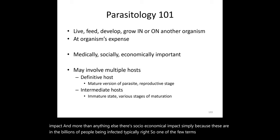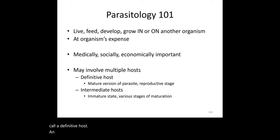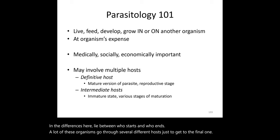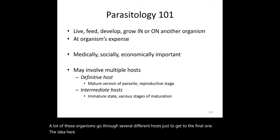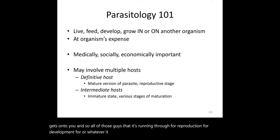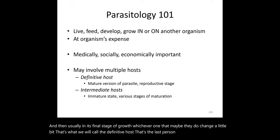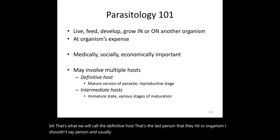Two key terms to know are definitive host and intermediate host. Many organisms pass through several different hosts—a rat, mouse, chicken, or other animal—before reaching the final one. Those hosts used for reproduction or development are intermediate hosts. The final stage of growth occurs in the definitive host, where the parasite reproduces.